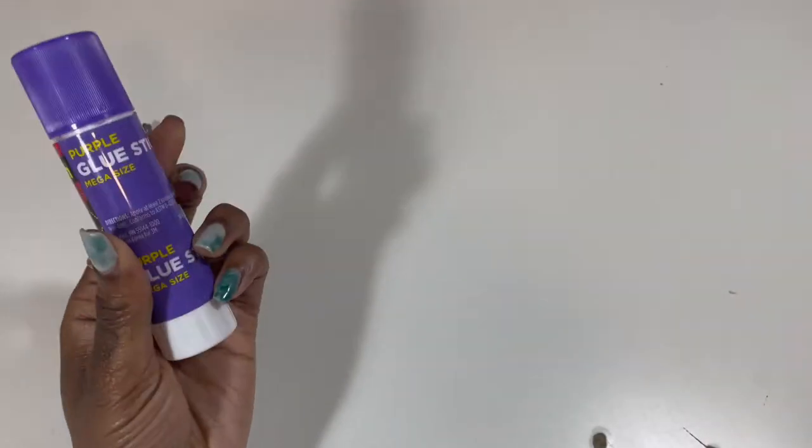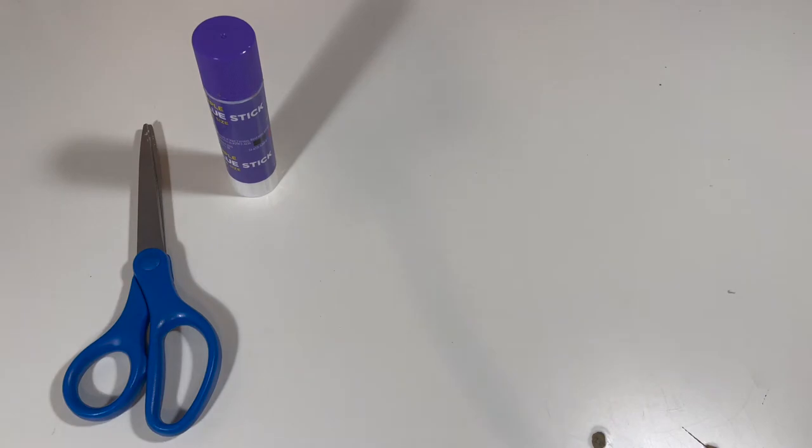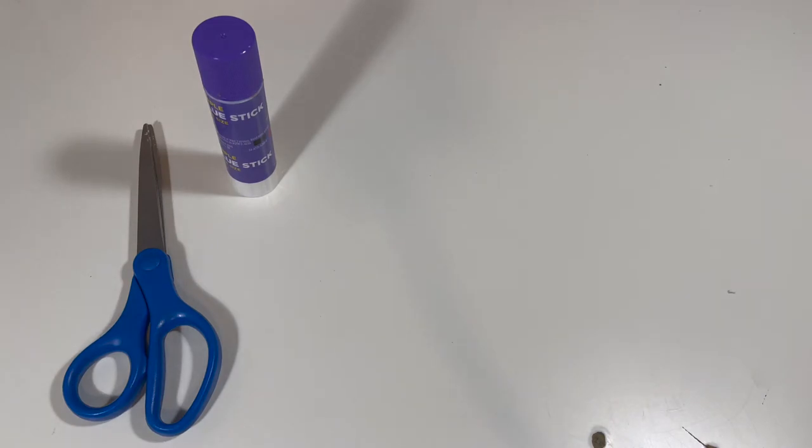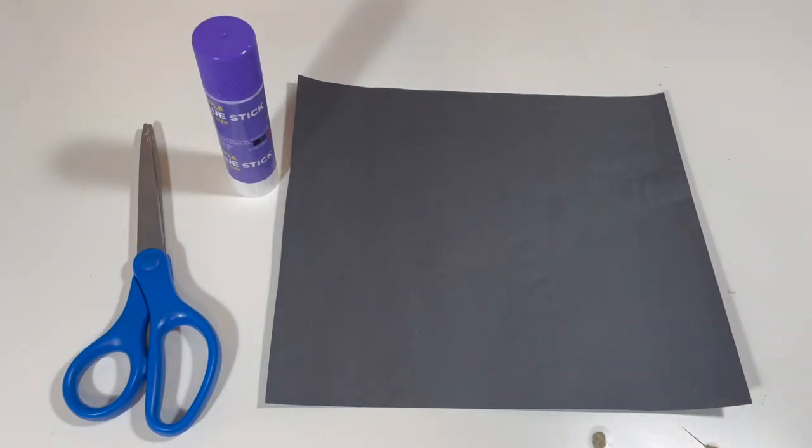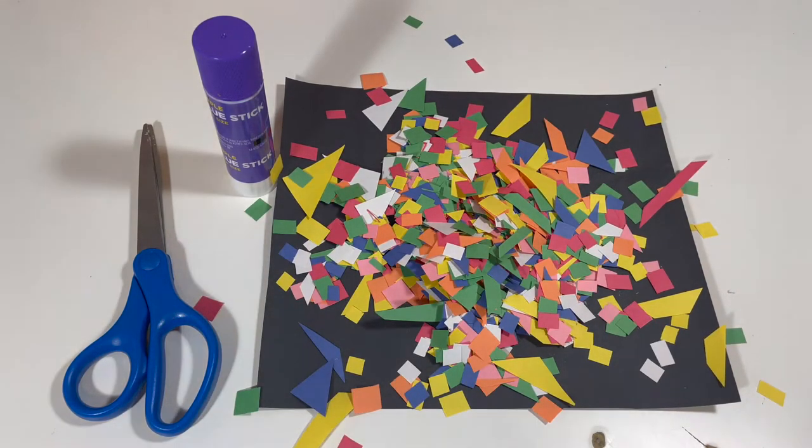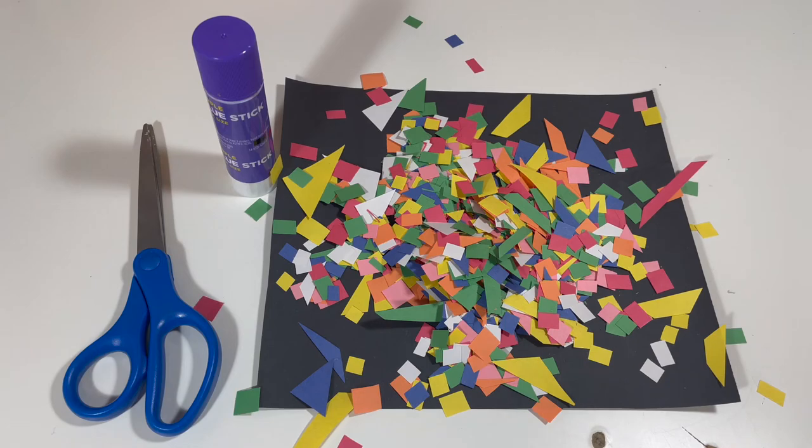Also our handy dandy supplies. First, we are going to need scissors, then glue. You can use any construction paper that you have, any color. I chose black because of what I wanted to use. And then most importantly, the pieces to make up the mosaic.